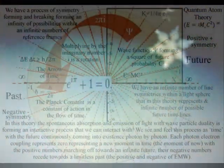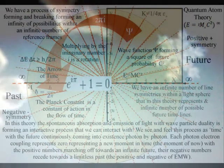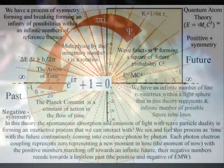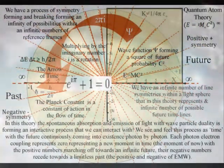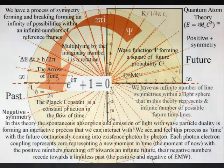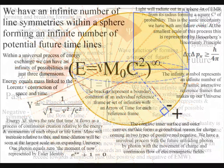The potential for this symmetry was always there, with an infinite number of line symmetries within a sphere, that in this theory represents an infinite number of potential timelines. The surface of the sphere forms a dynamic boundary condition, with the outer convex surface forming a geometrical reason for positive charge, and the concave inner surface forming negative charge.